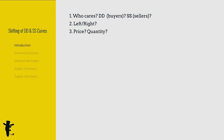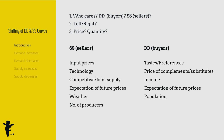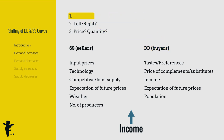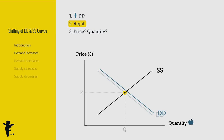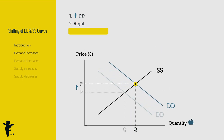Let's recap. Here are the factors affecting supply and demand. Suppose income increases. People have more money, they buy more stuff. It increases demand. The demand curve shifts right. Price increases. Quantity increases.